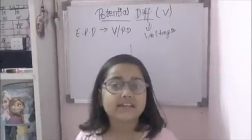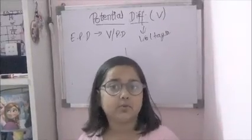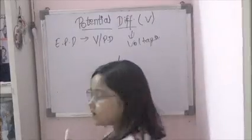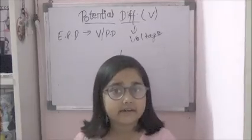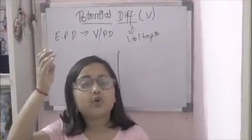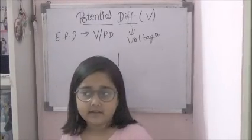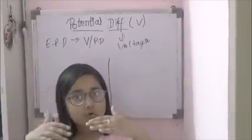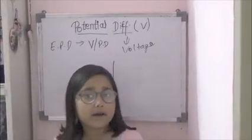Let's understand with an example. We know that the mains supply in India is 220 volts and the ground potential is 0 volts. If we touch the mains, we get a very strong current because the mains potential is 220 volts and the ground potential is 0 volts.